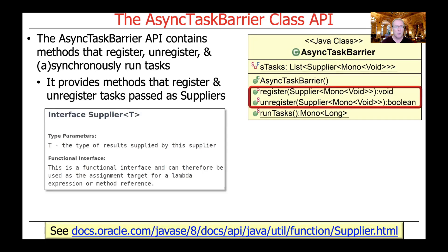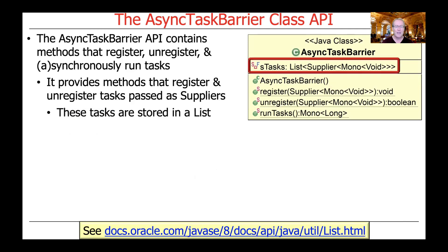It provides two methods that register and unregister tasks. These methods are passed suppliers, and this allows us to pass method references to the register and unregister methods, making it very clean and easy to integrate various test functions or test methods that we want to examine. The tasks passed to register and unregister are stored in an internal list, which is a list of suppliers to Monos to void.